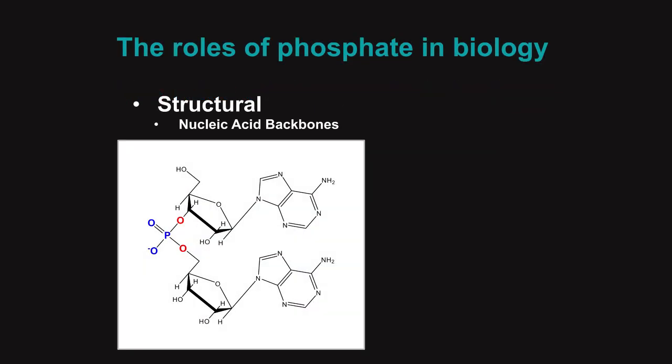The first of these roles of phosphate, and perhaps the most important, is the structural role that phosphate plays in the backbone of nucleic acids. All RNA and DNA — all of your genetic material — is linked by what is known as a phosphodiester bond. And the reason for this is rooted in a few properties of phosphate related to the negative charge that it imparts on the backbone.